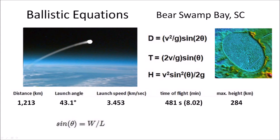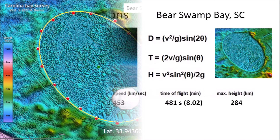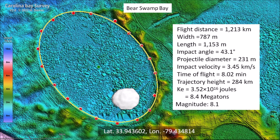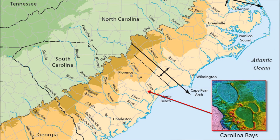The kinetic energy of the impact that made Bear Swamp Bay was equivalent to 8.4 megatons of TNT, which would have caused seismic vibrations of magnitude 8.1. The flat, porous terrain of the Atlantic Coastal Plain is one of the reasons why the Carolina Bays have been well preserved on the East Coast. By contrast, the Nebraska wind-water basins, which are on rougher terrain, do not show the same degree of preservation.